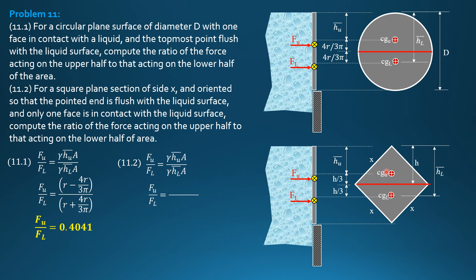Barred h upper is 2 thirds h, which is h minus h over 3, while barred h lower is h plus h over 3. That's 2 thirds h divided by 4 thirds h. Cancel h, cancel 3, so 2 over 4 or 1 half. That's it.